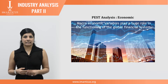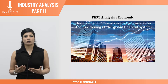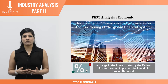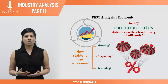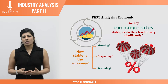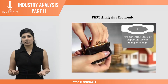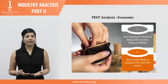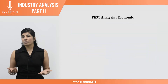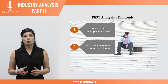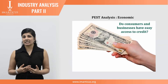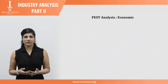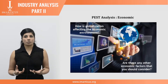Next is the E in PEST: economic factors. These are macroeconomic variables that play a huge role in the functioning of the global financial system. For example, a change in interest rates by the Federal Reserve has an immediate impact on stock markets worldwide. To understand economic variables, ask: how stable is the current economy — is it growing, stagnating or declining? Are key exchange rates stable or do they vary significantly? Are customers' levels of disposable income rising or falling? What is the employment rate likely to be, and will it be easy or expensive to build a skilled workforce? Do consumers and businesses have easy access to credit? How is globalization affecting the economic environment?